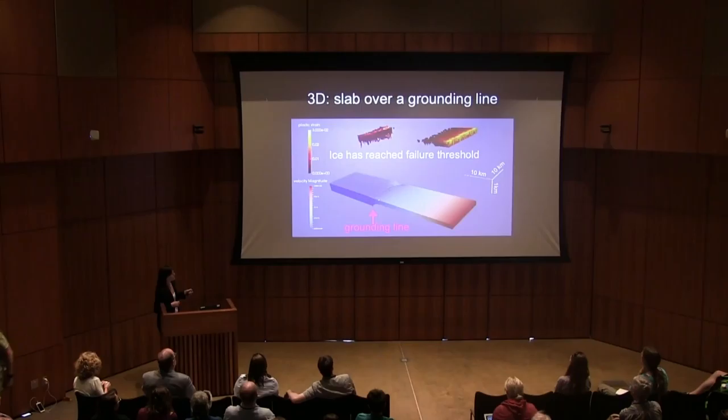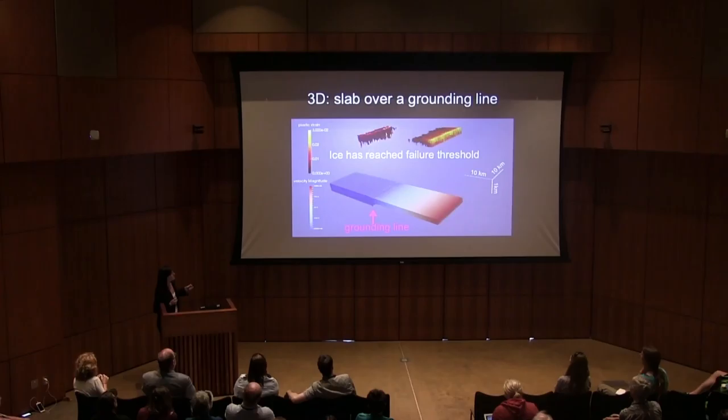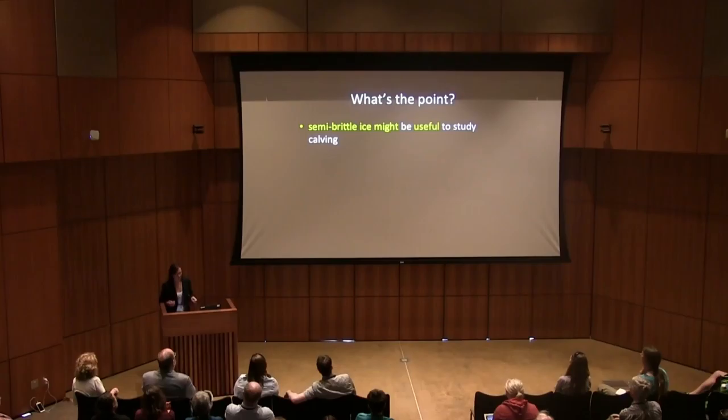The model has potential. It's already in 3D — here's a really simple slab of ice being pulled over a grounding line and the resulting failure field from this very simple setup.